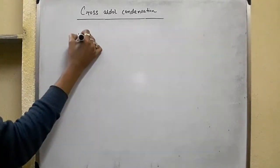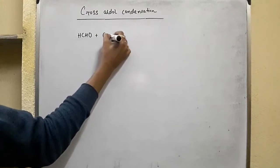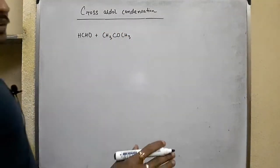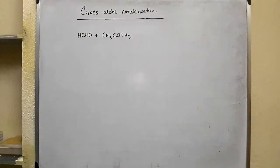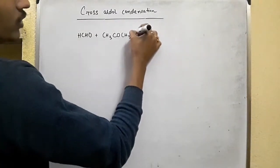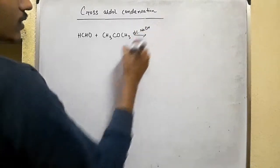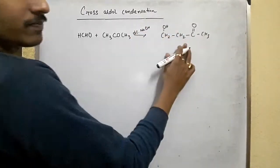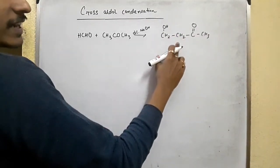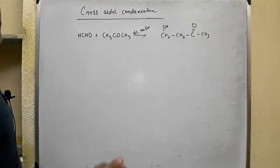If you take acetone instead of acetaldehyde, the reaction steps and mechanism are the same. The first aldol product forms accordingly, but this is not the final product since it still contains alpha hydrogen atoms and further reacts with formaldehyde.